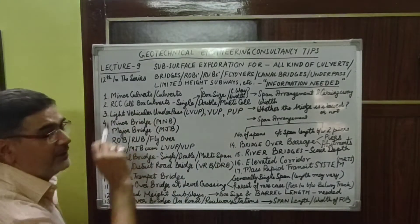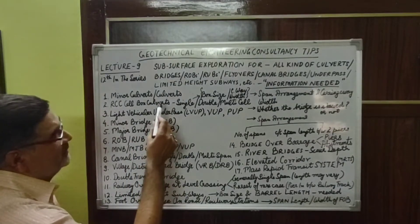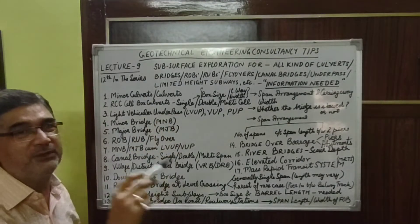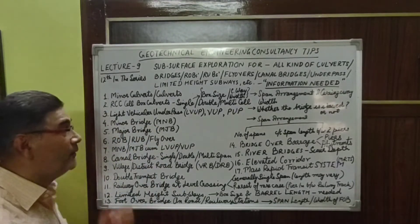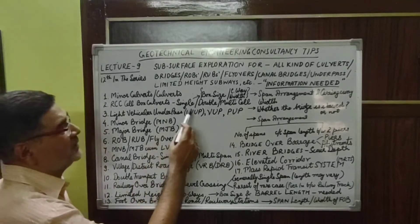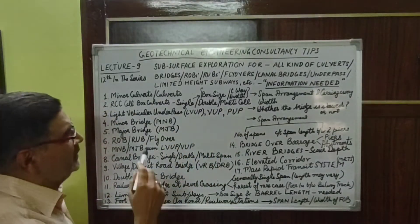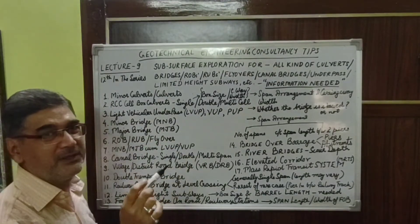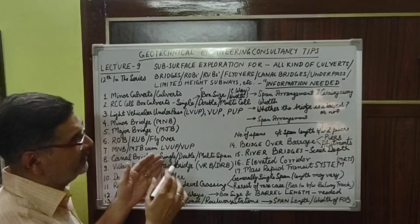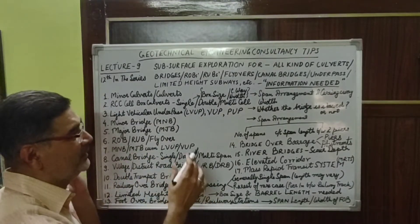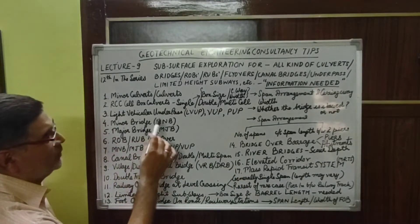Number one is minor culverts. The span length of these culverts may vary from 3 to 6 meters. In general, RCC cell box culverts may be single box, double box, or multi-cell box. The size of the box is usually represented by the width of the box, the height of the box, and the number of cells to be provided at the site.